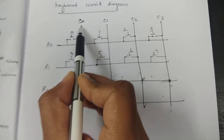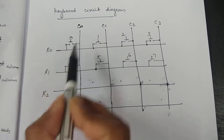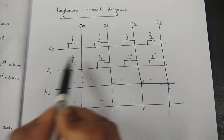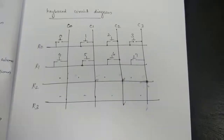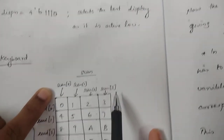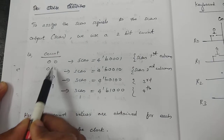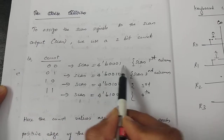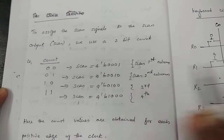When pressing digit zero, it acts as a closed circuit and c0 connects to r0. If I send a signal one to scan the first column and zero is pressed, r0 becomes one; if four is pressed, r1 becomes one. According to these different conditions we decide which element is pressed and display it on the seven segment display. For scanning different columns we use scan input assigned with signals using a two-bit count.